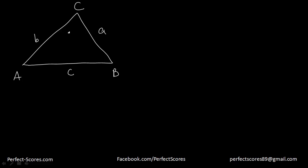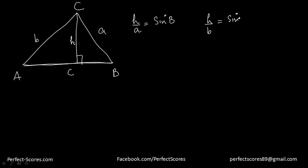Now let's suppose I want to find the area of the triangle. Let's suppose C is the base and I want to find the height H. As you know, H over A is equal to sin B, and H over B is equal to sin A — because sine is perpendicular over hypotenuse. So H over A is sin B and H over B is sin A, which means the height of the triangle is A sin B, and also B sin A.